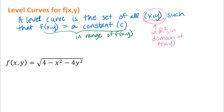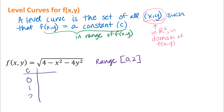This is the same function we looked at in the previous example. We've already talked about the domain and range of this function, and the range of this function is the interval zero to two. That gives us a small range of values to think about for output values. I'm going to choose some convenient constant output values in this range. I'll make a little chart to organize my work: c equals zero, c equals one, and c equals two. I want to think about what the level curve is for each of those.